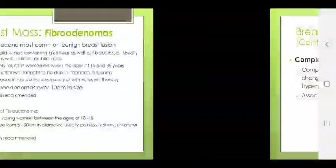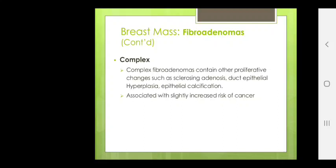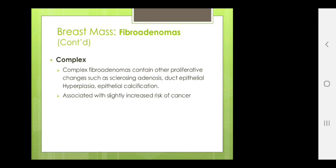Giant fibroadenoma may be over 10 cm in size — excision is recommended. Juvenile fibroadenoma is a variant, usually between 10 to 18 years, varying in size from 5 to 20 cm, painless, solitary unilateral mass — excision is recommended. Complex fibroadenoma contains other proliferative changes such as sclerosing adenosis, duct epithelial hyperplasia and epithelial calcification, and is associated with slightly increased risk of cancer.